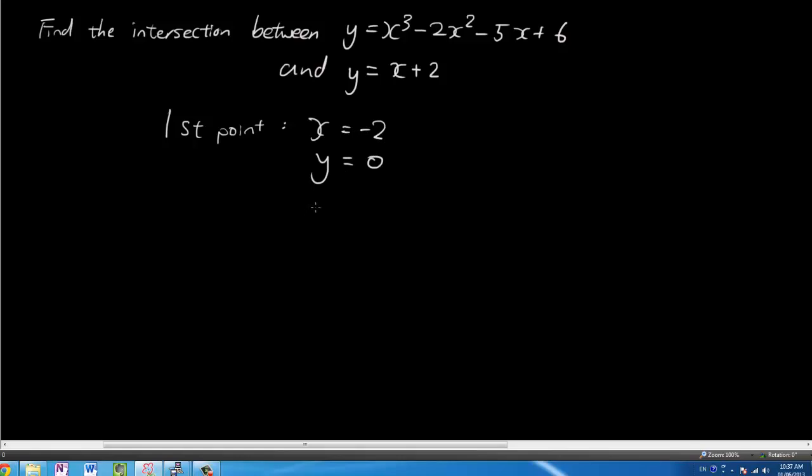And if you want to test whether it's correct, you can substitute negative 2 into the x variables, into all the x variables, and see whether y will be equal to 0 for both of these equations. So let's try that with the bottom one. So negative 2 plus 2 is 0. And here we have negative 2 cubed, which is negative 8, minus negative 2 squared is 4. 4 times negative 2 is negative 8.